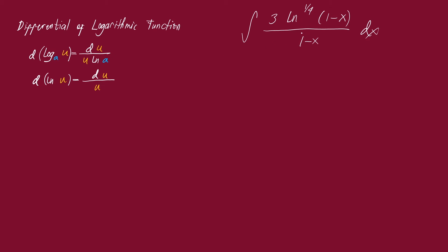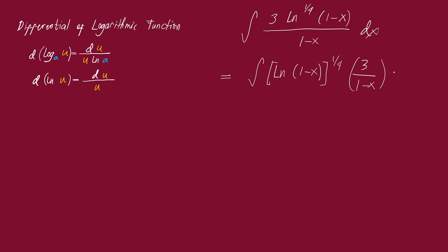Looking at this, since our logarithmic function has an exponent, we'll use the logarithmic function as our u. We're going to write this out so you can see what we'll do. This will be the integral of ln of (1 minus x) raised to the power of one-fourth, and the remaining factors are 3 over (1 minus x) dx.